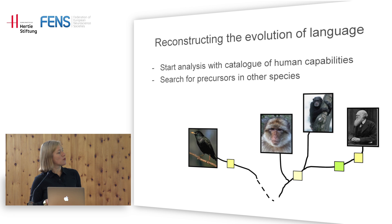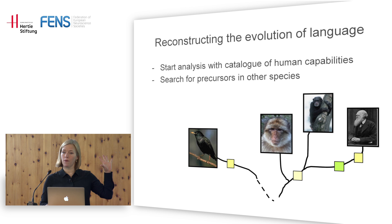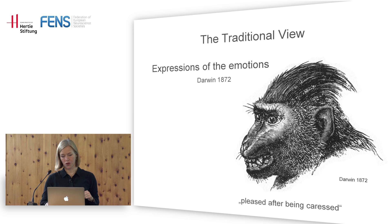What we are trying to look at is whether certain traits are shared with hominoids, or whether we can go further back and find features shared with all mammals. We are looking for precursors in other species. This contrasts with the traditional Darwinian view, very influential in ethology, that most signals — vocalizations, facial expressions, body postures — can be conceived as expressions of emotions.